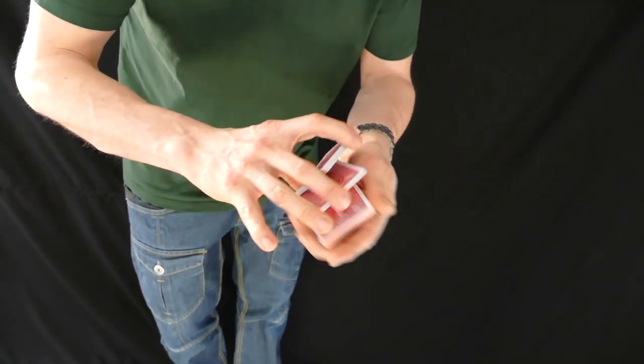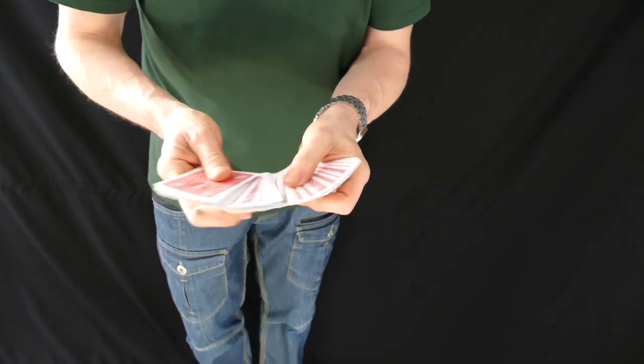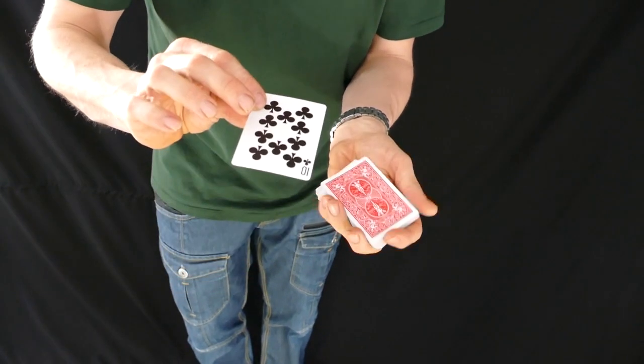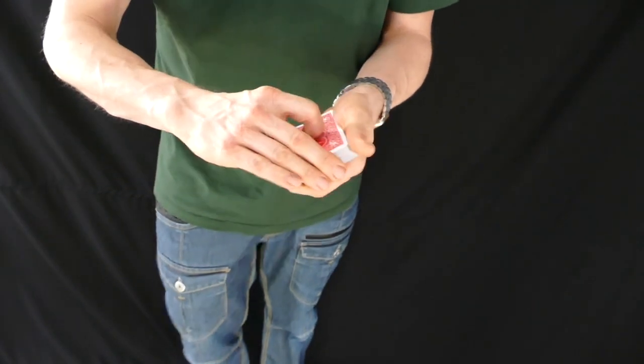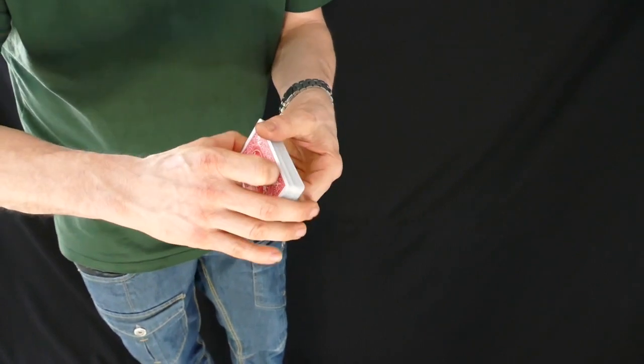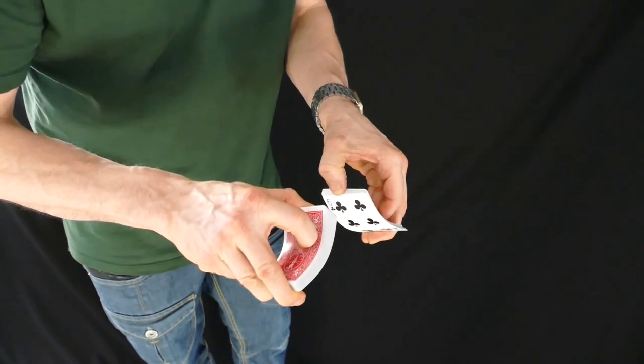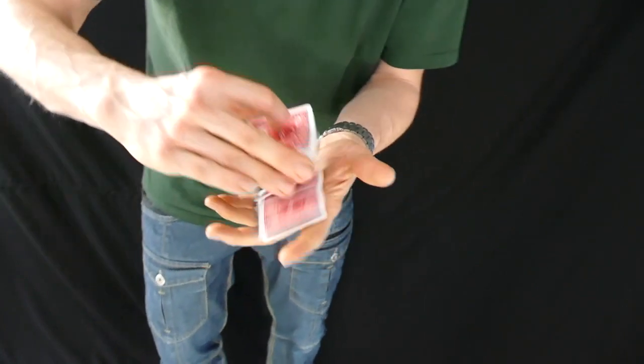Okay so for this trick a spectator can take any card they wish. In this case it's the ten of clubs. Ten of clubs goes about halfway in the pack, give it a few little cuts like so. I'll give it a shuffle. I say shuffle because I can't say shuffle. Little mix like so.